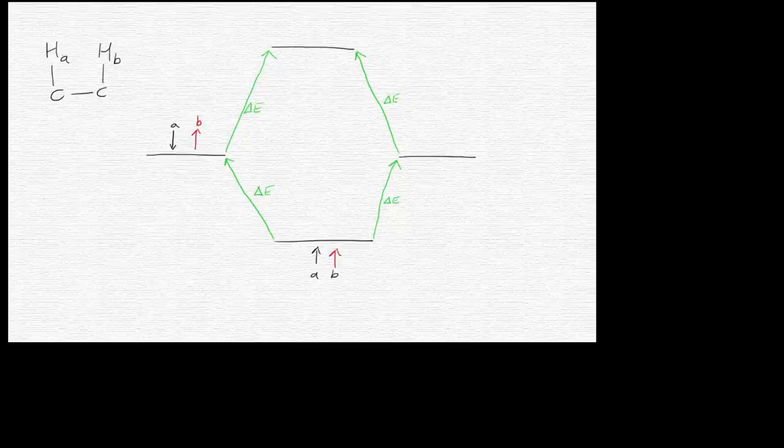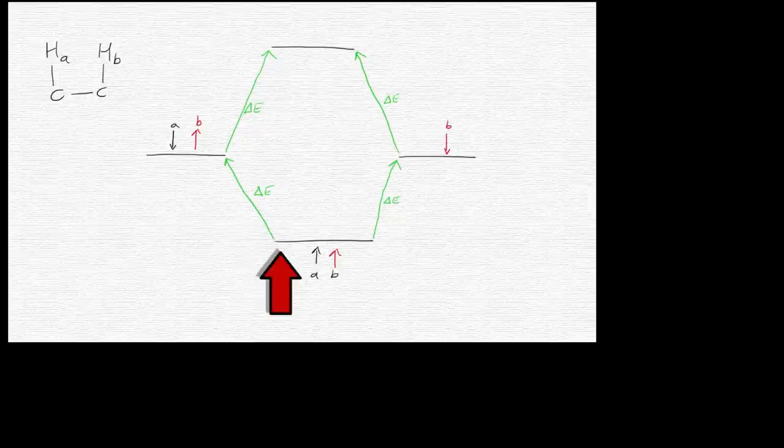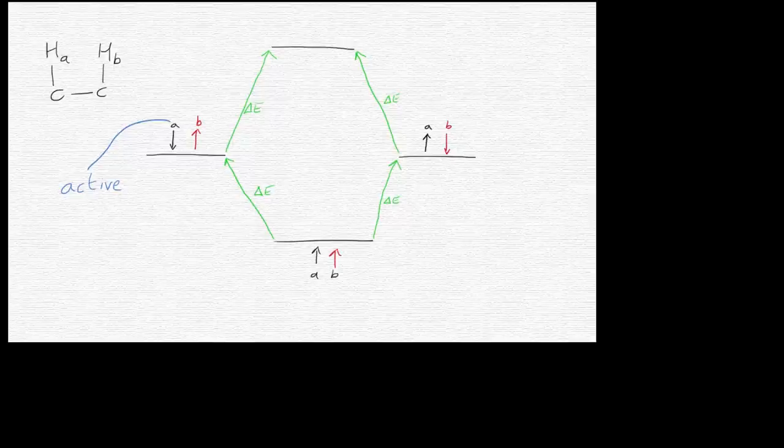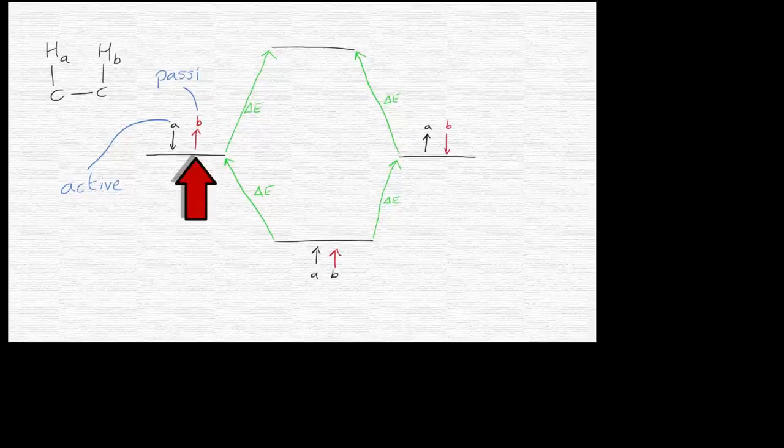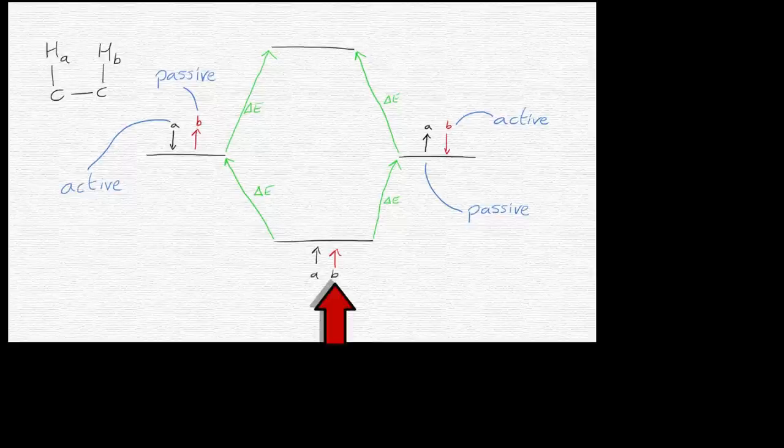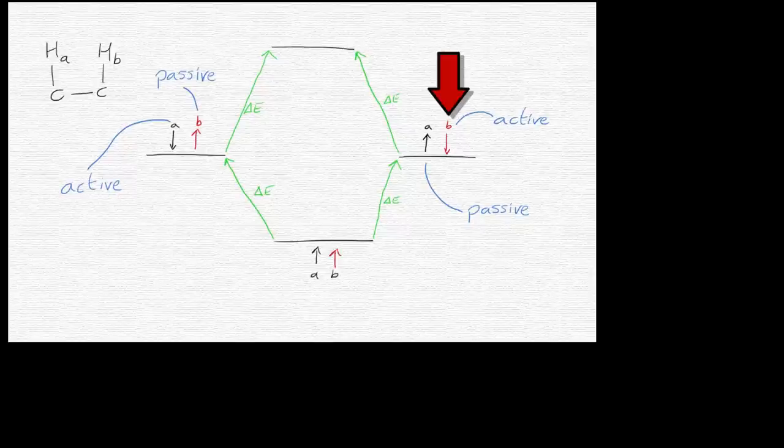In the first transition shown here, we have the A-spin flipping. So that goes from an up-orientation to a down-orientation, and that is called the active spin because that's the one that's actually flipping. If you look at the B-spin, just for this particular transition, it doesn't change, and that's called a passive spin. If you look on the other side now, we can see that the A-nucleus spin doesn't change, so that is now the passive spin. But the B-spin has flipped, so that is called the active spin or the active transition.